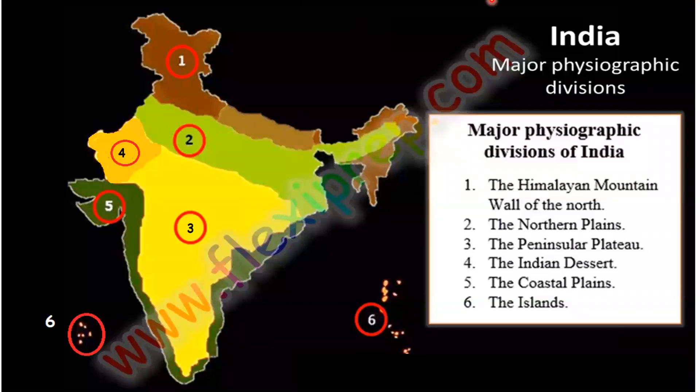Hello everybody, this is Vashri Vengdesh. After learning about the location and boundaries of India and Indian Standard Time in the previous episodes, today we will be learning about the major physiographic divisions of India. Before saying what are all the major physiographic divisions of India, let us first know what the word 'physiographic division' means. It is nothing but explaining the distinct landforms of a region. India, like any other country, has different physiographic divisions which are broadly classified into six categories.